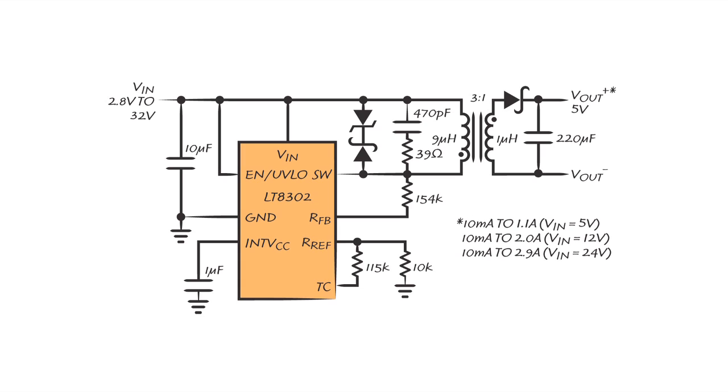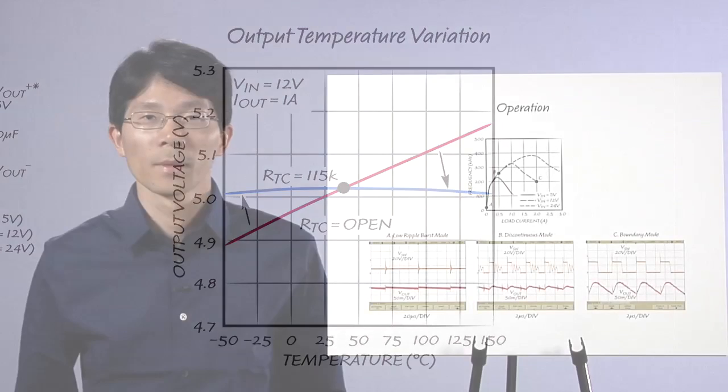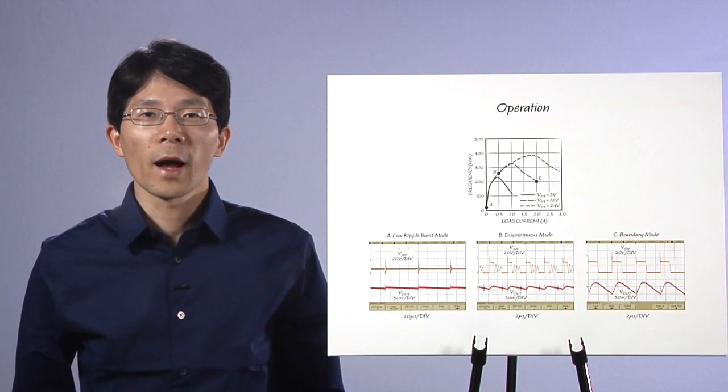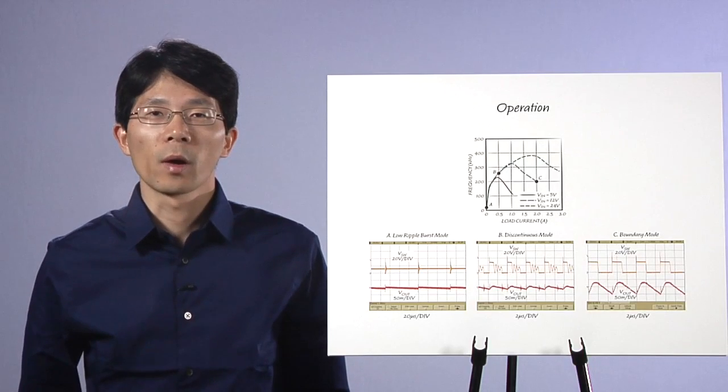but shows 2 to 5% regulation error on 3.3 V and 5 V outputs. Housed in an ALIE SO package with an exposed pad, the LT8302 offers output temperature compensation. With a 115 k TC resistor, the output variation across temperature is fully compensated.